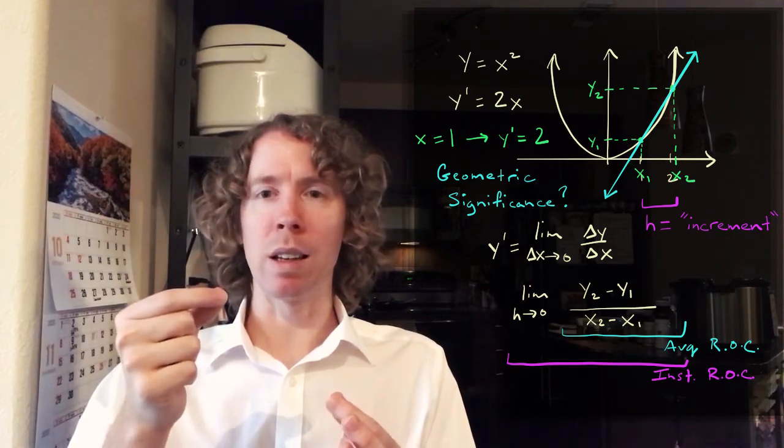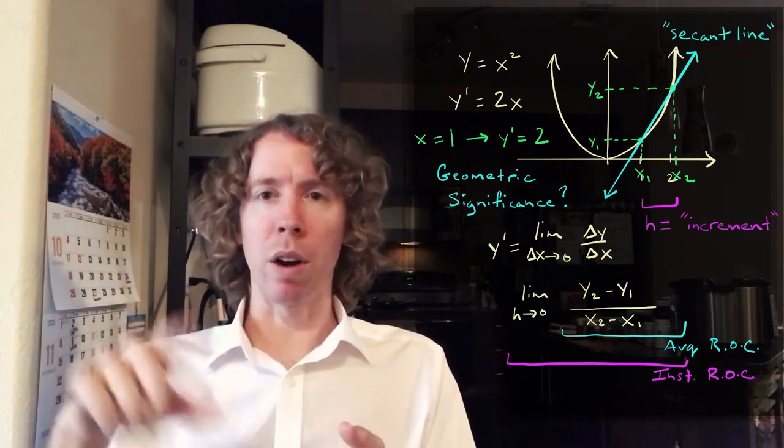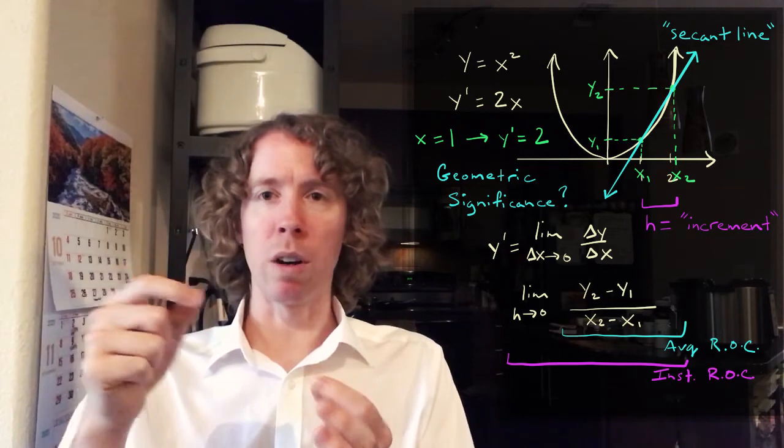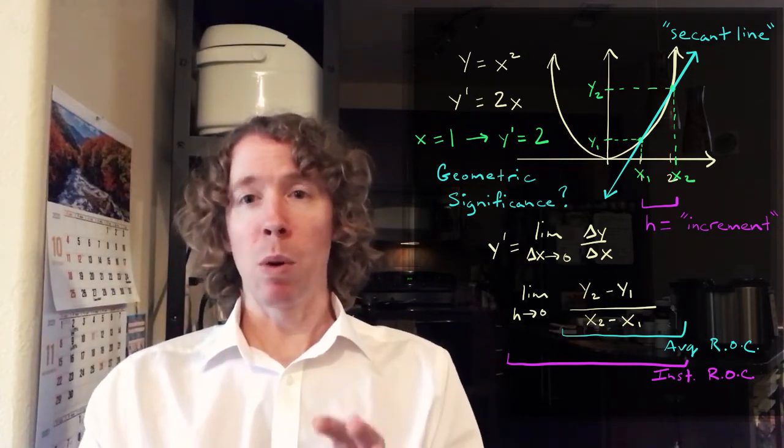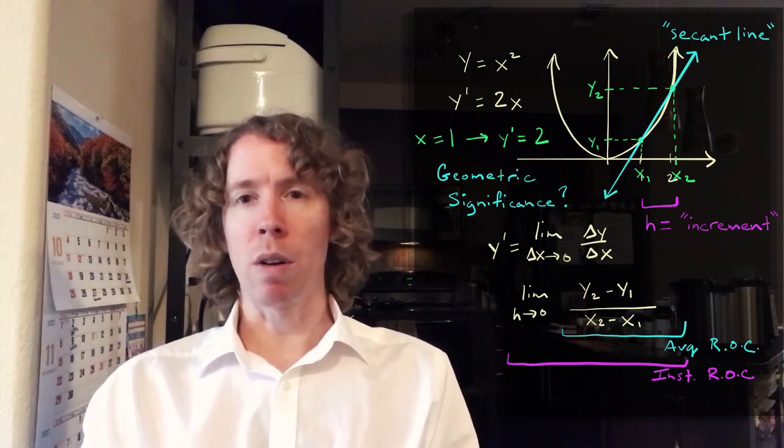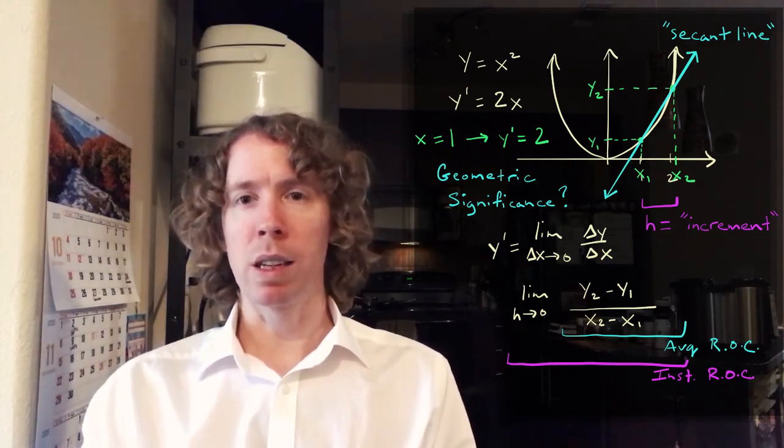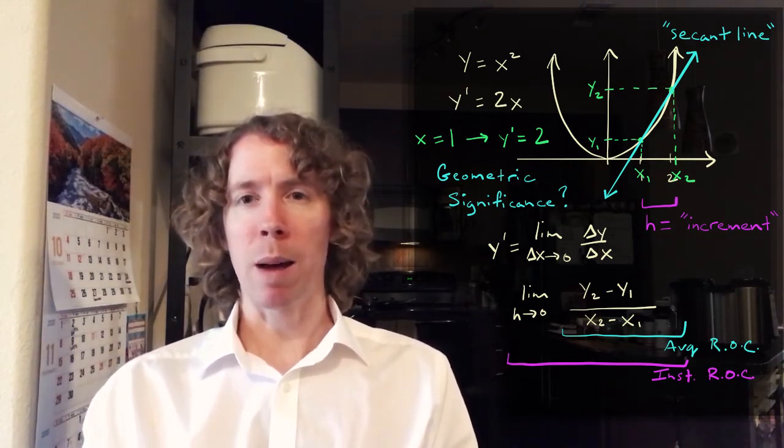It's sometimes called a secant line. If there's, you got a curve with two points on the curve and you make a line through it. But when we take the limit as H goes to zero of that slope of that secant line, look at what happens.